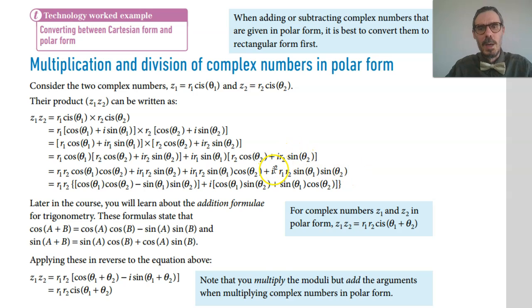Now, i squared becomes negative 1. Here are the real parts and here are the imaginary parts. Now, what you've got here is some complex looking trig, but they follow a very clear pattern.